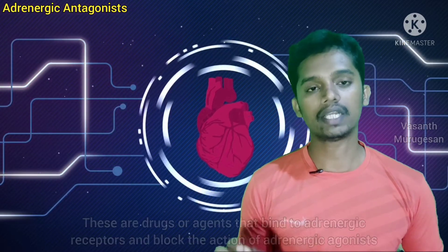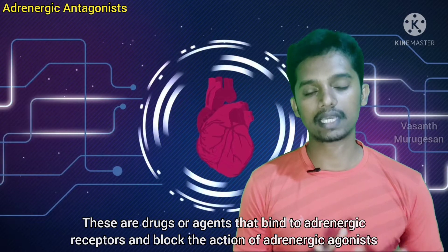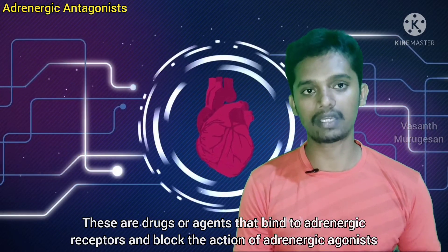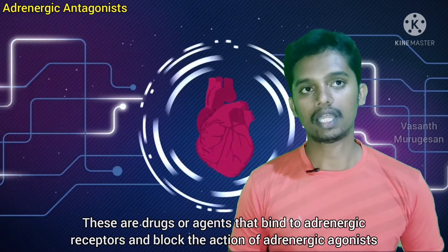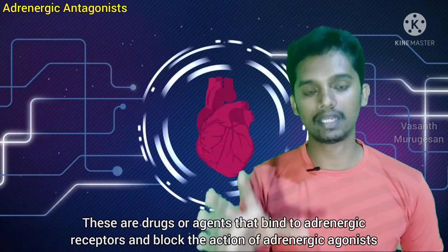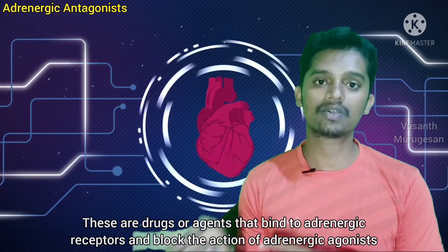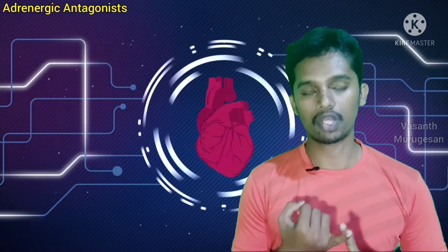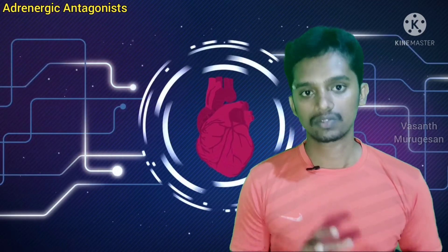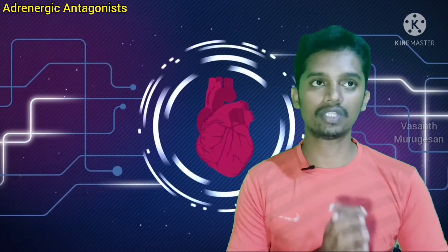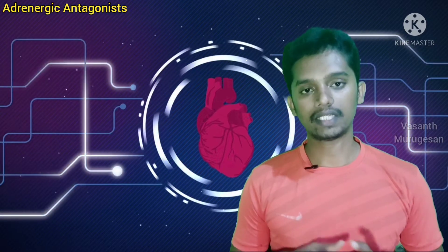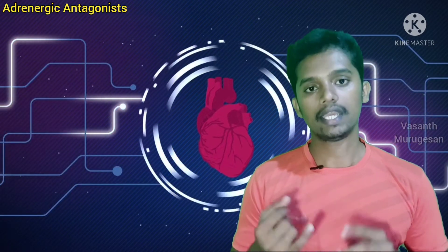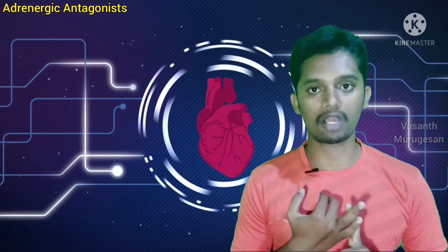First, the definition. Adrenergic blockers, or adrenergic antagonists, are drugs or agents that bind to adrenergic receptors and prevent the action of adrenergic agonists. These drugs bind to either the Alpha Receptor or the Beta Receptor to block the agonist action. This is the basic agonism and antagonism rule — agonists do the actual work, antagonists block the agonist.